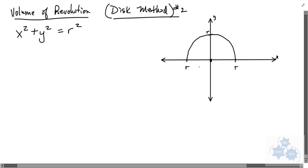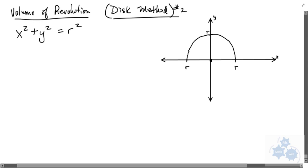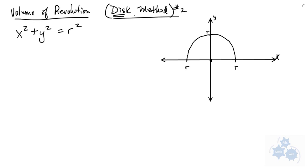All right, so AP Calculus AB, volumes of revolution. This is another disk method. We're going to rotate this semicircle about the x-axis and use that disk method. I like this example because I'm going to show you at the end, it's going to connect with something that you already know about, and I think it's going to be pretty neat.